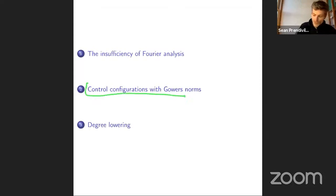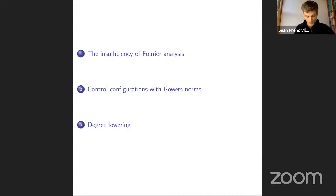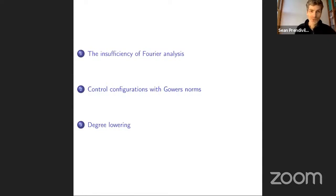Instead of using the L-infinity Fourier norm — which controls counting solutions to an equation by the largest Fourier coefficient of the weights — we're going to control those weights with Gowers norms. We'll introduce what they are and give a sense of what they measure. For the application this week, we go via Gowers norms but eventually show that most Gowers norms don't matter; only the L-infinity Fourier norm is relevant, so we're back to where we started.